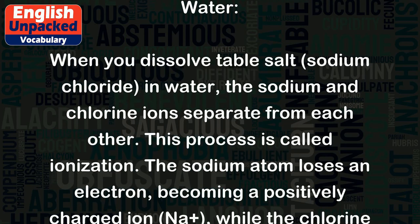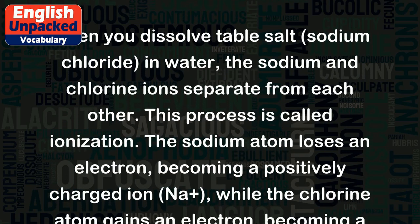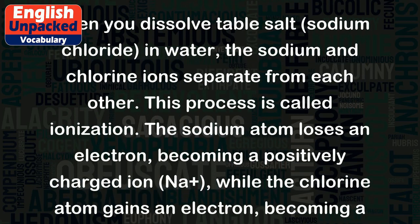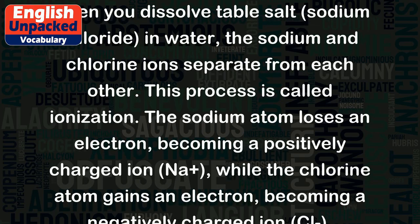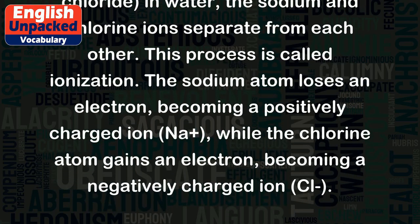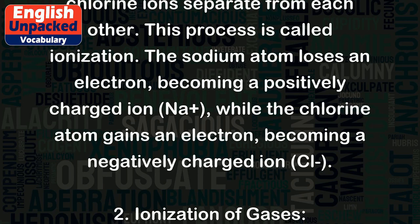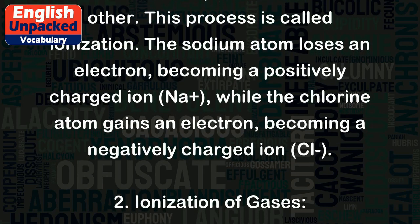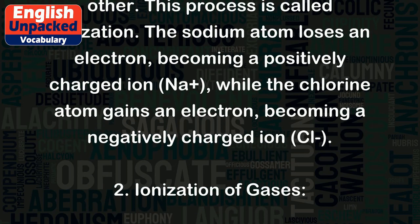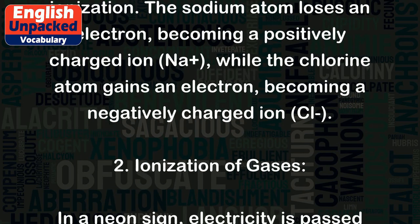The sodium atom loses an electron, becoming a positively charged ion, Na+, while the chlorine atom gains an electron, becoming a negatively charged ion, Cl-.